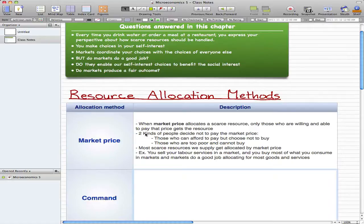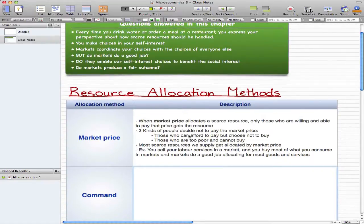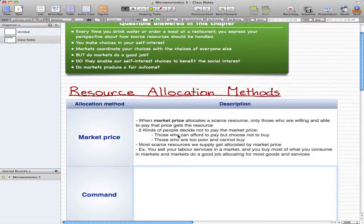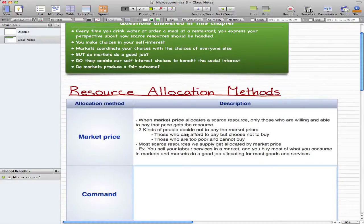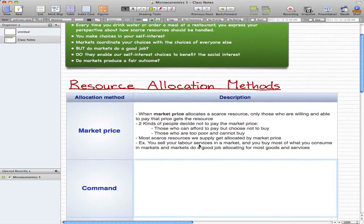Only those who are willing and able to pay the $2,000 will get the resource, and that's market price. There are two kinds of people that decide not to pay the market price: the first kind is those who can afford to pay but choose not to, and the second kind is those who are too poor and cannot buy the product.